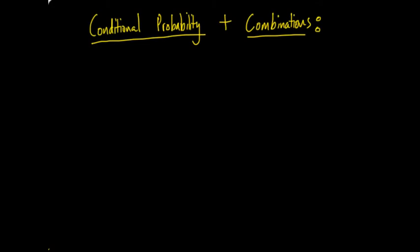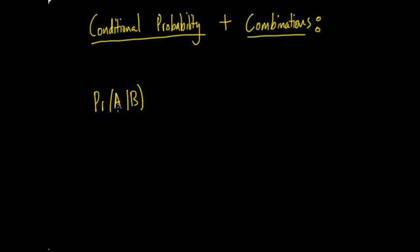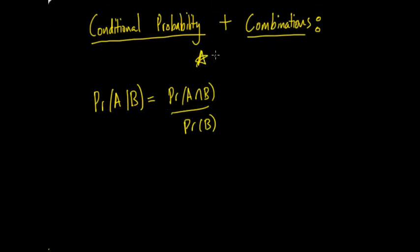Another quick concept is independent events. If you remember, they are when one event does not affect the other — if one occurs, it doesn't change the probability of the other occurring. So for conditional probability with independent events, the formula for the intersection is P(A∩B) equals P(A) times P(B). Substituting that in, we get P(A) times P(B) over P(B).